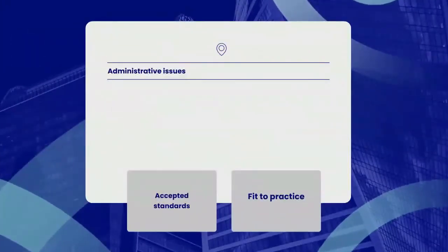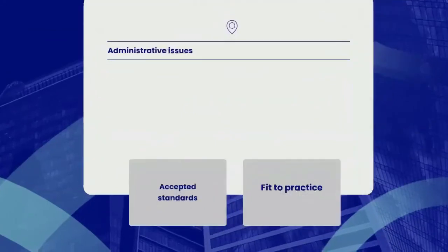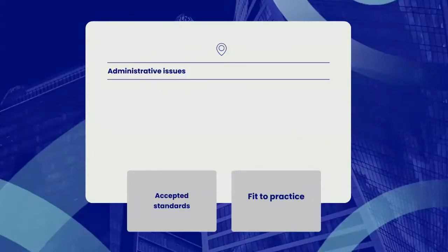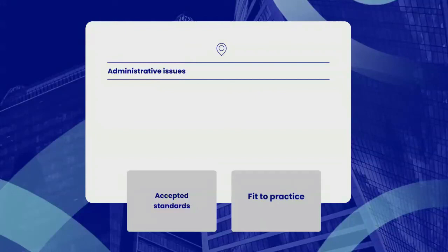Now we'll discuss administrative issues. The first administrative issue is accepted standards. There is a plethora of standards and guidelines in computer forensics, few of which appear to be universally accepted. The reasons include standard-setting bodies being tied to particular legislation, standards aimed either at law enforcement or commercial forensics but not both, authors of such standards not being accepted by their peers, or high joining fees for professional bodies discouraging practitioners from participating.